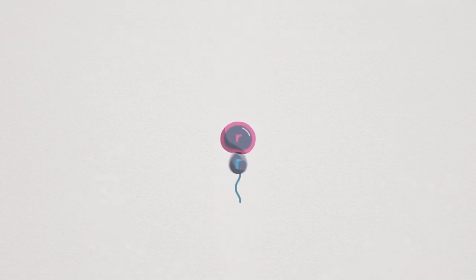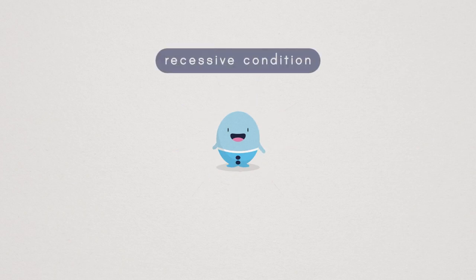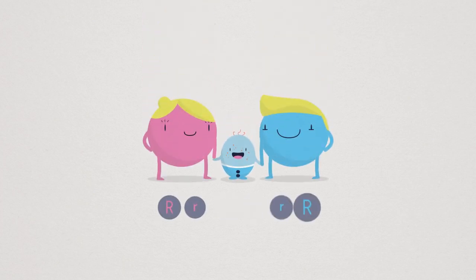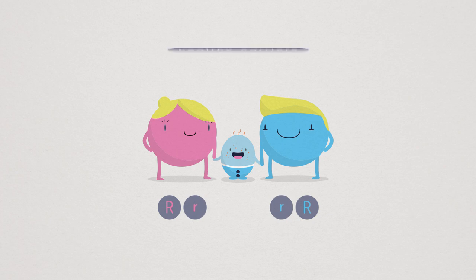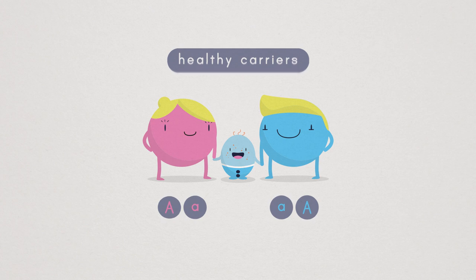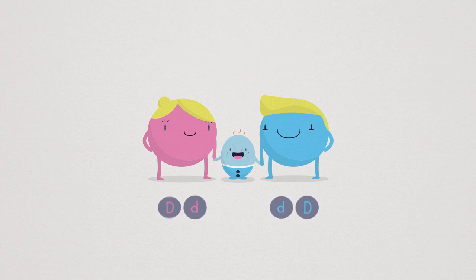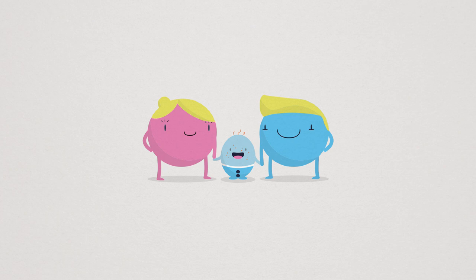For each gene, we have two copies. One copy comes from our mother and the other copy comes from our father. In an autosomal recessive condition, an individual needs both copies of the gene to be faulty for a condition to develop. The parents of the child usually carry only one faulty gene of the gene pair — they are healthy carriers. It is estimated that every individual is a healthy carrier of several faulty genes, but a recessive condition occurs only when both individuals in a couple happen to carry the same faulty gene.